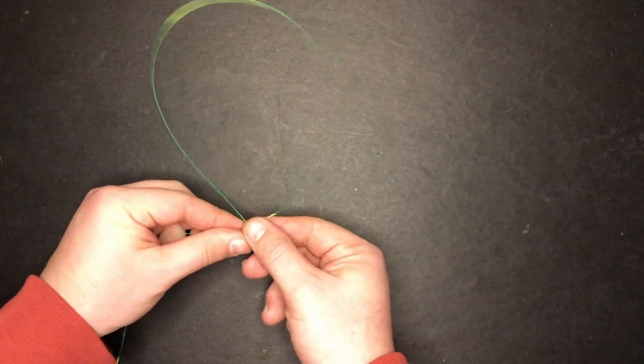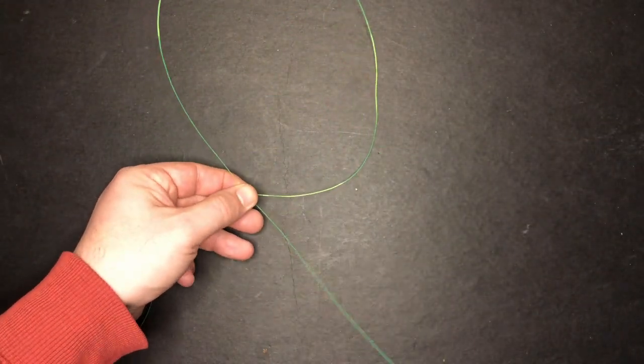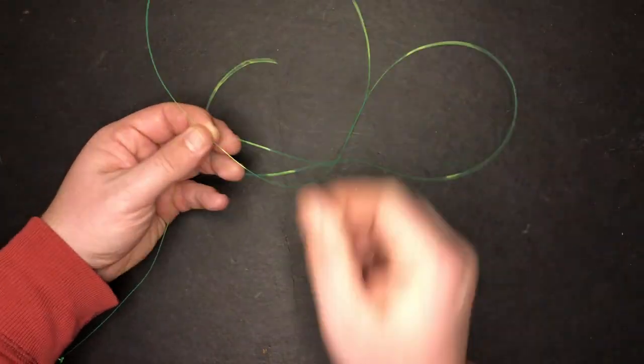Now I'm going to move down the line to create my second dropper loop, keeping in mind I want it to be 12 to 18 inches below the first. I also wanted to give you guys a couple of pointers that I've learned since tying this rig.